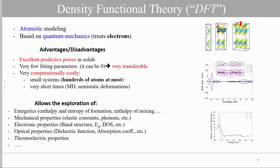So let's start with the first family of atomic scale simulation, the density functional theory, the so-called DFT. DFT is atomistic modeling based on quantum mechanics, so it treats electrons. It has excellent predictive power in solids. It requires very few fitting parameters, it could be zero. The parameters are very transferable. However, it's very computationally costly. One can envisage to study only a small system of hundreds of atoms at most. The time is very short, less than one nanosecond.